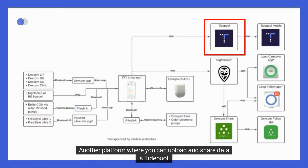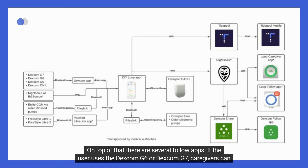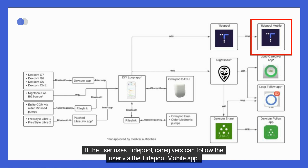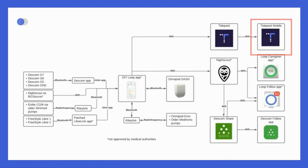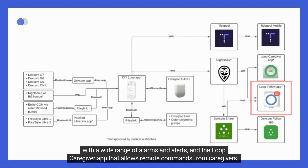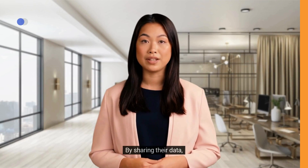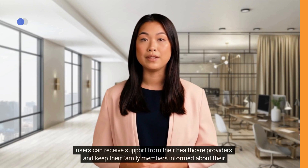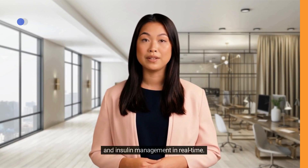Another platform for uploading and sharing data is TidePool. Additionally, there are several follow apps: caregivers can track data through the Dexcom Follow app for G6 or G7 users, or via the TidePool mobile app. There are also two open-source apps for remote monitoring: the Loop Follow app with a wide range of alarms and alerts, and the Loop Caregiver app that allows remote commands. By sharing their data, users can receive support from healthcare providers and keep family members informed in real-time.